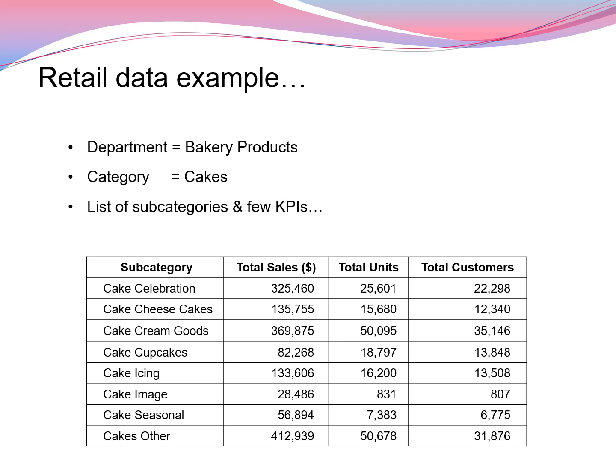Let's say I have a retail data example. I have a department called bakery products, then we have the category as cakes, and these are the following list of subcategories and a few KPIs — that means key performance indicators.